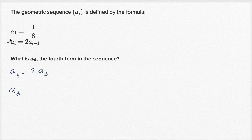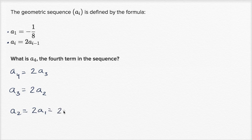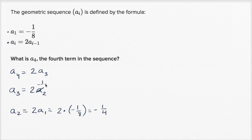A₃, if we use this formula, is going to be equal to two times a₂. Each term is equal to two times the term before it. And then a₂ is going to be two times a₁. We know that a₁ is negative one eighth, so a₂ is two times negative one eighth, which equals negative one fourth. And so a₃ is two times negative one fourth, which equals negative two fourths, or negative one half.